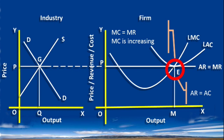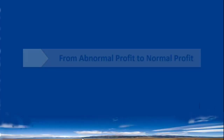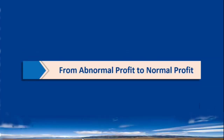Moreover, there will be no tendency on the part of the firms to leave the industry. This is only a part of the story. To complete the story, we shall assume all the firms are earning supernormal profit — that is, we are going to examine long run equilibrium from abnormal profit to normal profit.